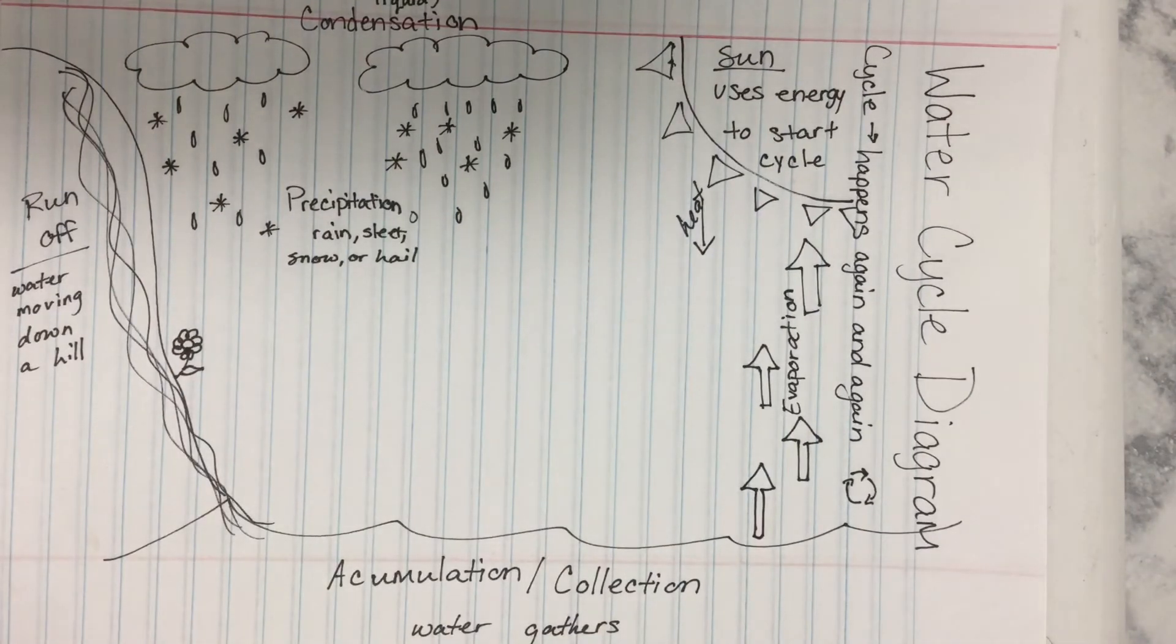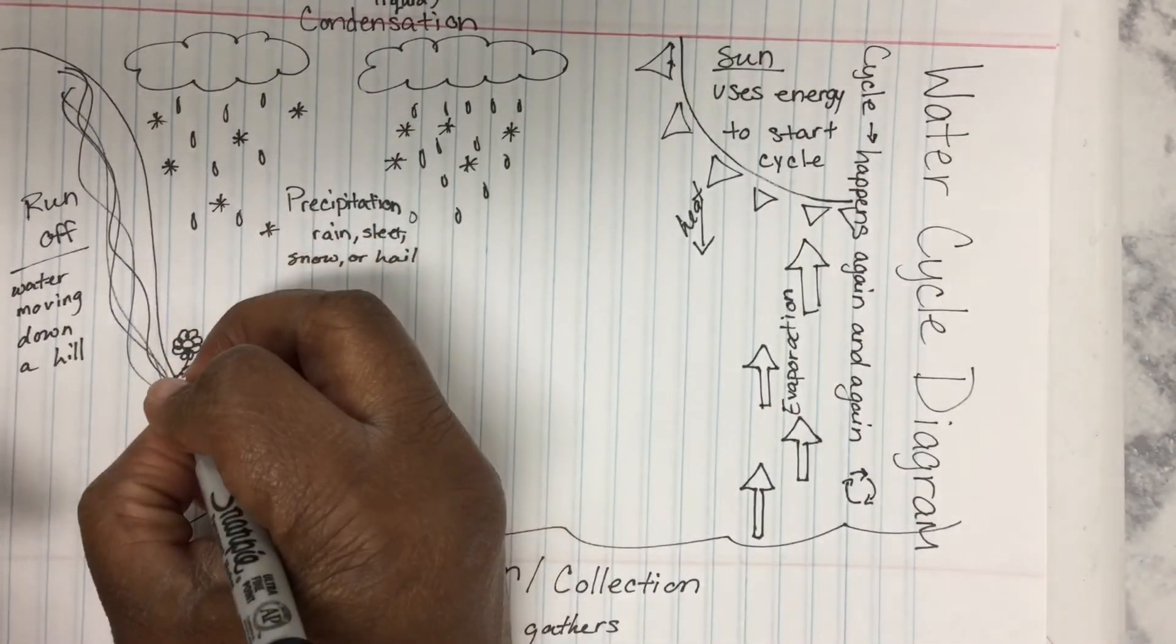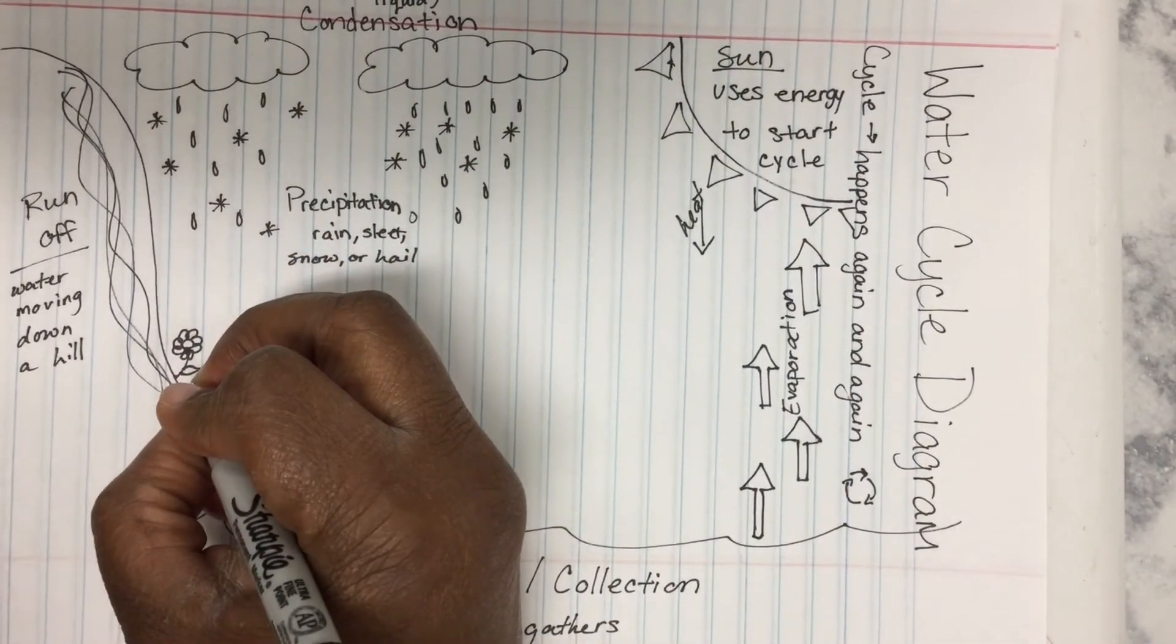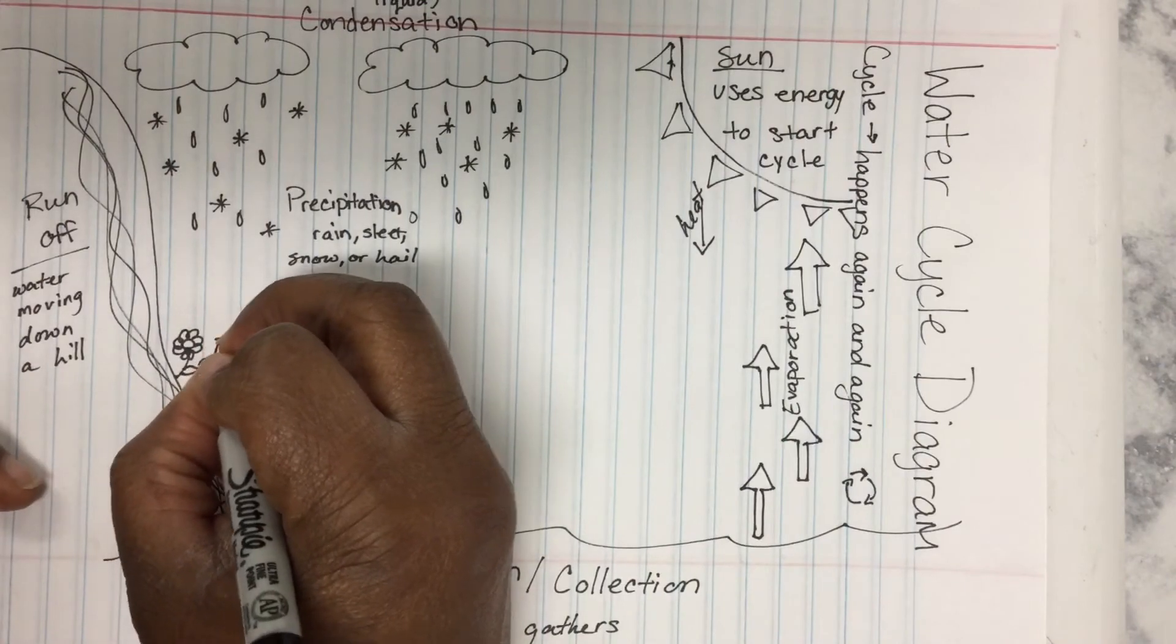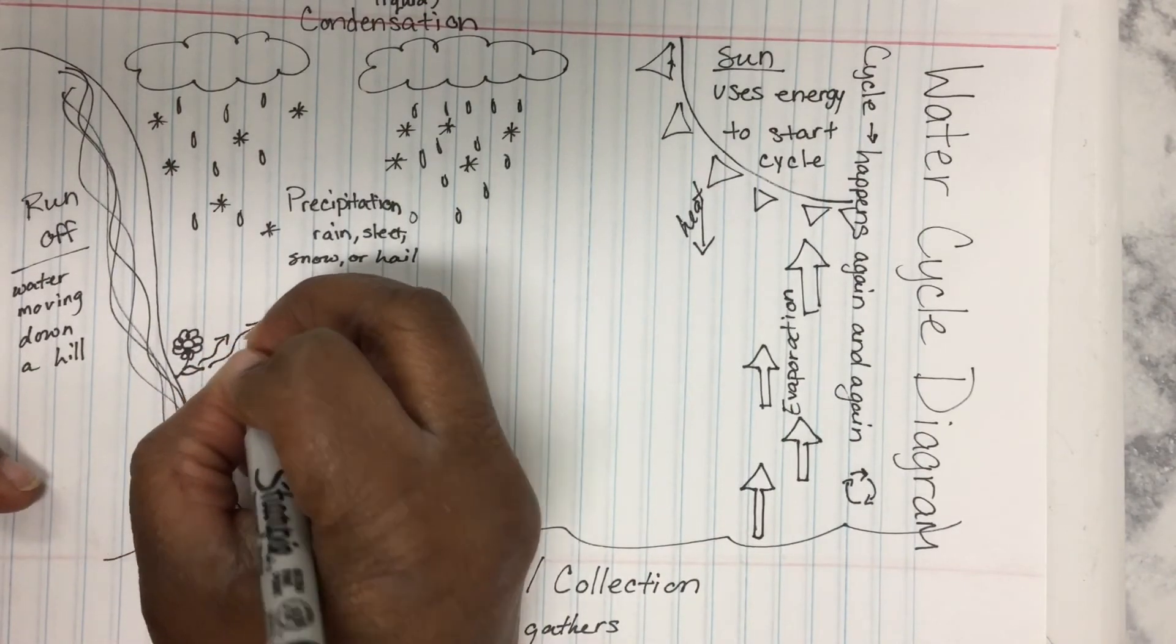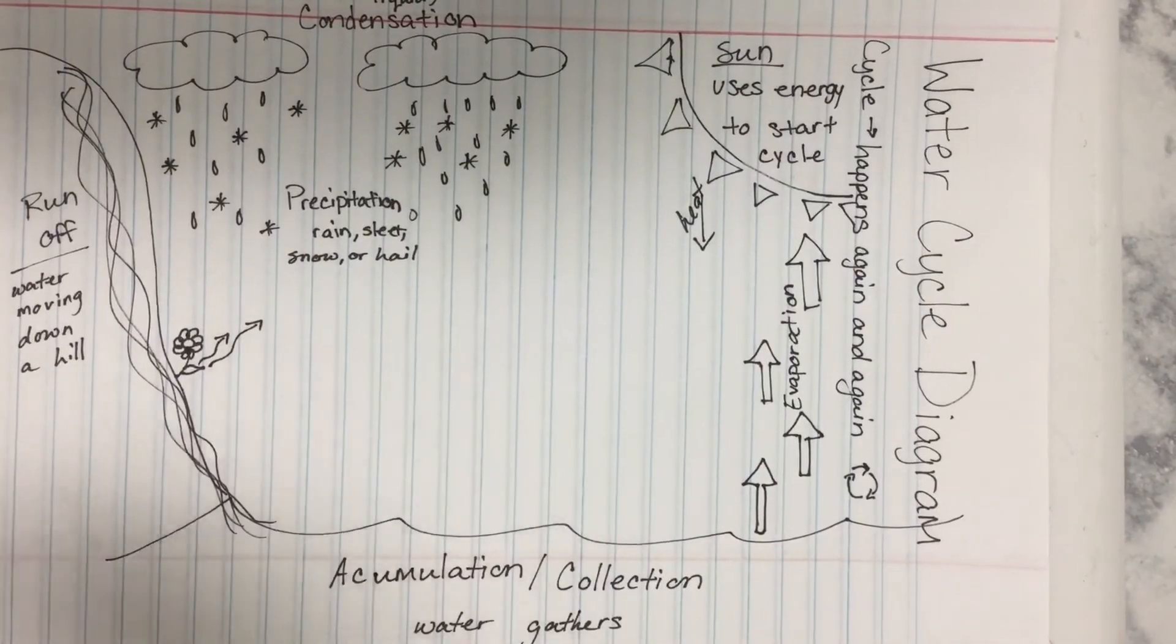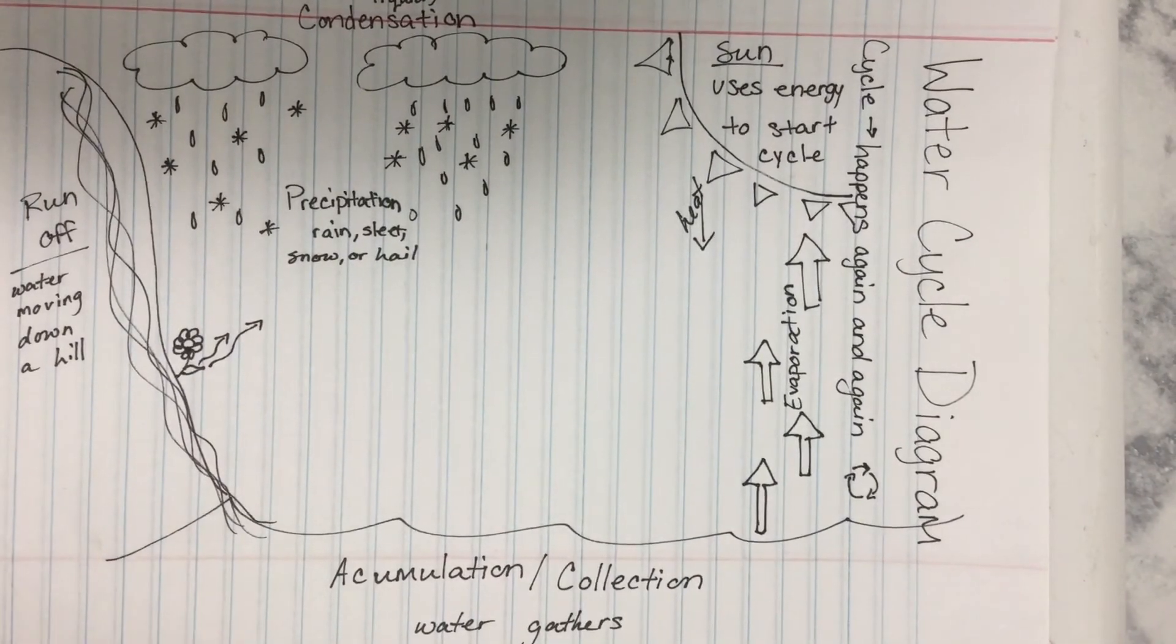We're going to talk about transpiration in another video, but you do need to know that basically all that's happening is that water is coming out of a plant's leaves, or it's leaving the plant, and it's evaporating into the sky so that it can form those clouds.